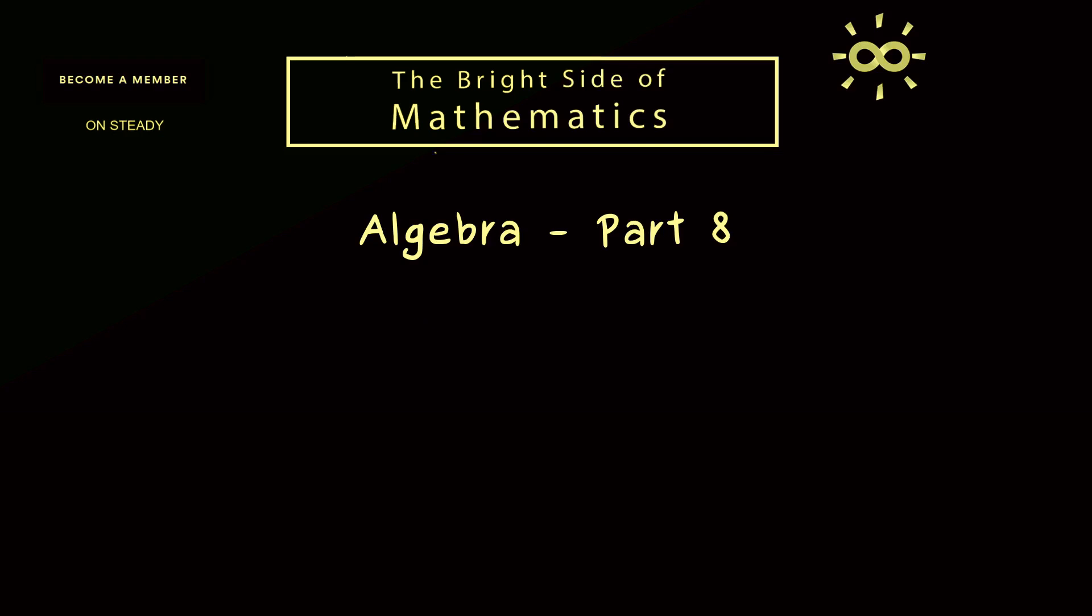Hello and welcome back to Algebra, the video series where we talk about algebraic structures like groups, rings, and vector spaces. Indeed, in today's Part 8, we will look at an important example of a group. More precisely, we will look at abelian groups of finite order.